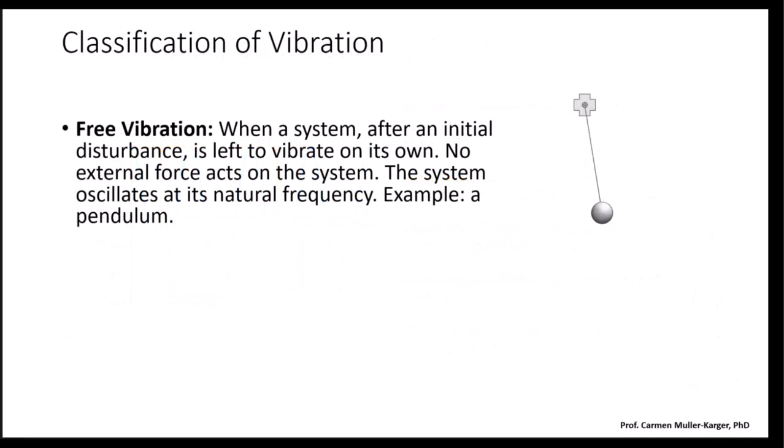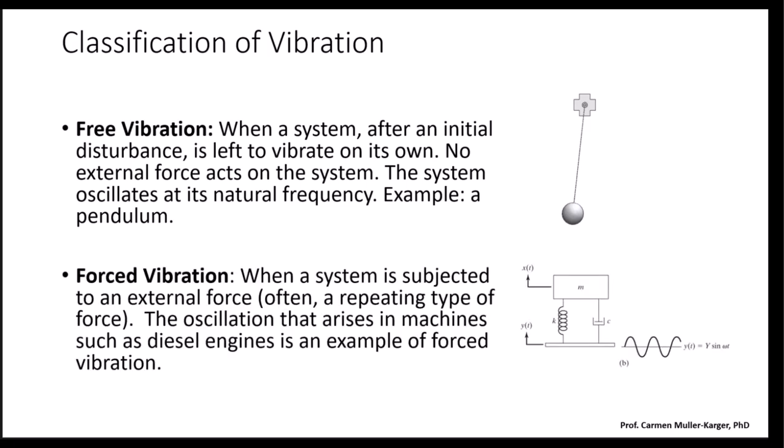Free vibration is when a system, after an initial perturbation, is left to vibrate on its own characteristics. No external force acts on the system. The system oscillates at its own natural frequency. The pendulum is an example. On the contrary, we have forced vibration, when a system is subjected to an external force, often a repeating type of force, a harmonic force or a periodic force. The oscillation that arises in machines such as diesel engines is an example of forced vibration. Here in this figure, we see a forced vibration due to the base motion.